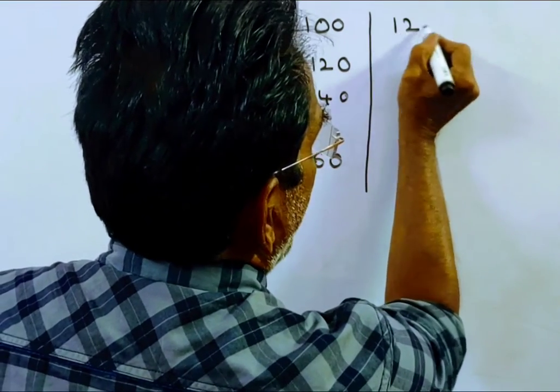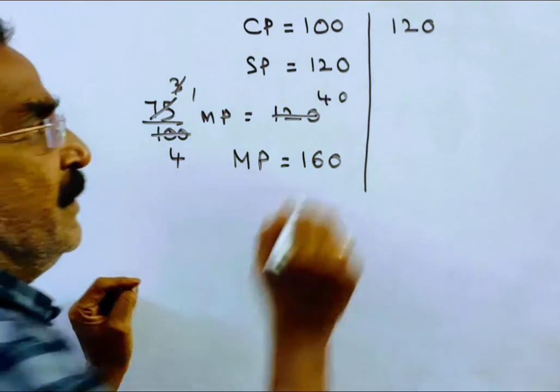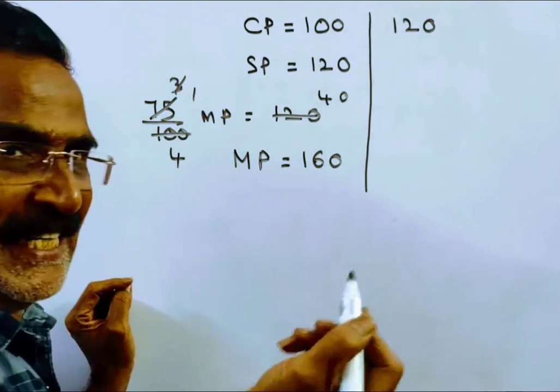So 8% of 120: 12 times 8 is 96, so 9.6, which is 9 rupees 60 paise.